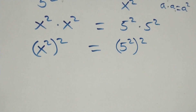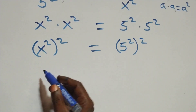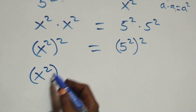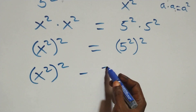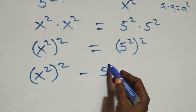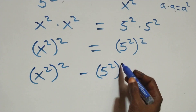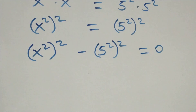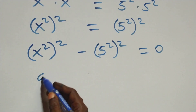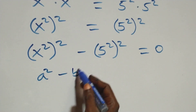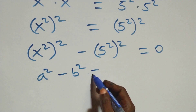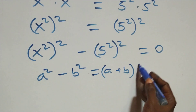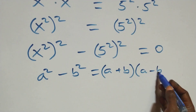The next step here, we take the right hand side to the left hand side, and we have x to the fourth minus 5 to the fourth equals to 0. This follows the identity: a squared minus b squared, which is the same thing as (a plus b) into brackets, then open brackets (a minus b).